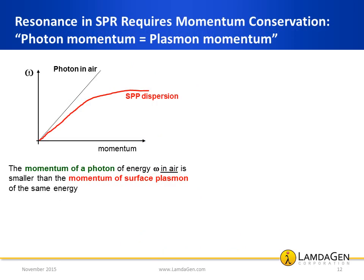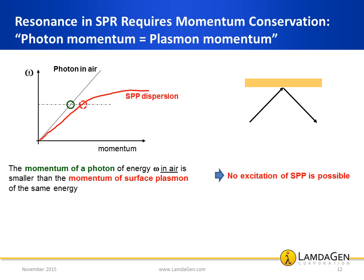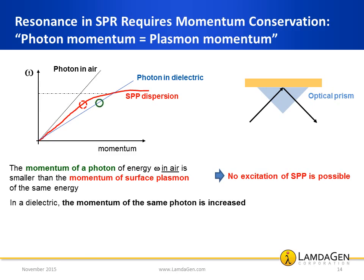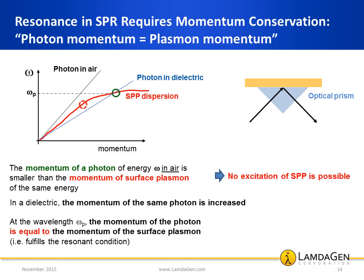In contrast, SPR has an additional and more stringent condition to fulfill its resonant condition: momentum conservation. The momentum of the impinging light in air is smaller than the momentum of the surface plasmon, so no excitation of surface plasmon is possible directly. To meet the resonant condition, the momentum of the light can be increased through adaptive optics, such as an optical prism. Therefore, for a certain wavelength, the momentum of the impinging light is modified to match the momentum of the surface plasmon, and a surface plasmon can then be launched. SPR requires the use of such adaptive optics to meet the resonant condition, which poses engineering challenges that will be discussed later.